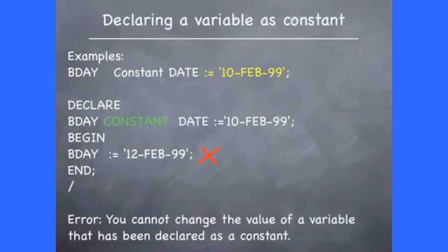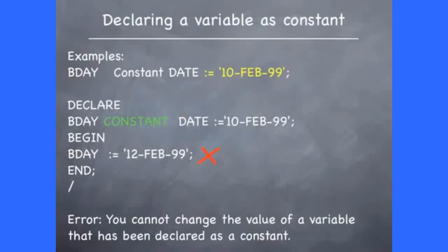When you declare a variable, you can optionally use the keyword constant. The word constant identifies that the value assigned to the variable during its declaration cannot be changed in the program. It is used when you want to create a variable to hold a certain value that will not change — for example, a variable holding the tax rate for a given state. In the example, the variable bday is declared to be of constant type with an initial value of 10th of Feb 1999. In the body, trying to assign another value — 12th of Feb 1999 — to bday will not work, and you will receive an error when you run the program.